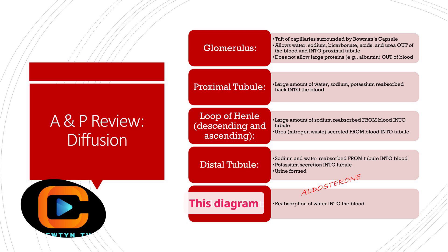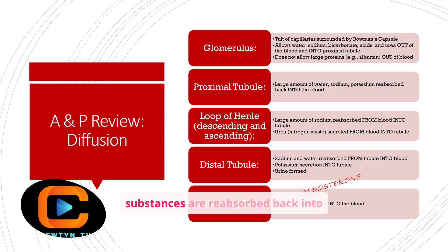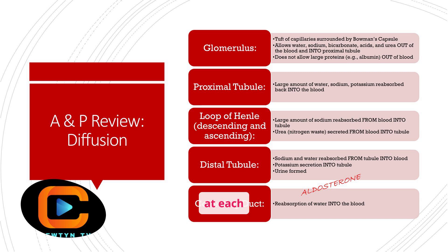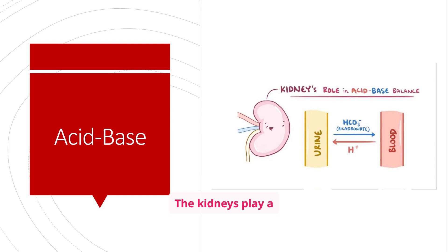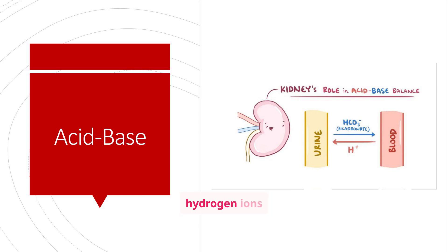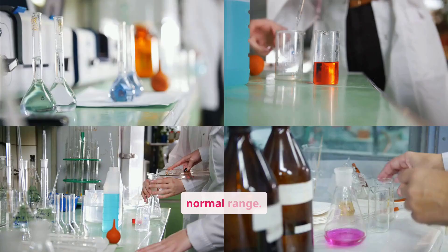This diagram illustrates what happens in each part of the nephron. Different substances are reabsorbed back into the blood or secreted into the filtrate at each stage. Note the role of aldosterone in the distal tubule, which influences sodium and water reabsorption. The kidneys play a critical role in maintaining acid-base balance by regulating the excretion of hydrogen ions and the reabsorption of bicarbonate, helping keep blood pH within a normal range.